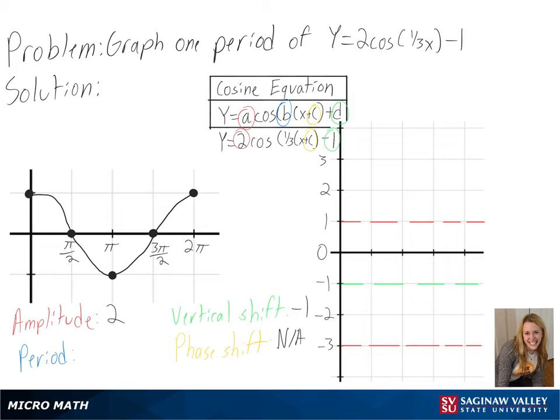Then we can solve for our period, or 2 pi over b. We can see here our b is a third, so we will get 6 pi as our period.